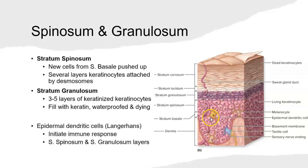Now we move to the stratum spinosum. Each time the keratinocyte stem cells in the stratum basale divide, a new cell is pushed toward the external surface, entering the stratum spinosum and beginning to differentiate into a non-dividing keratinocyte. The keratinocytes in the stratum spinosum attach to their neighboring cells with cell junctions called desmosomes, providing a lot of structural support throughout the epidermis.